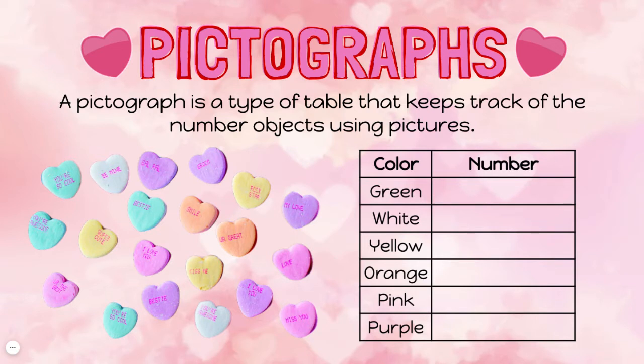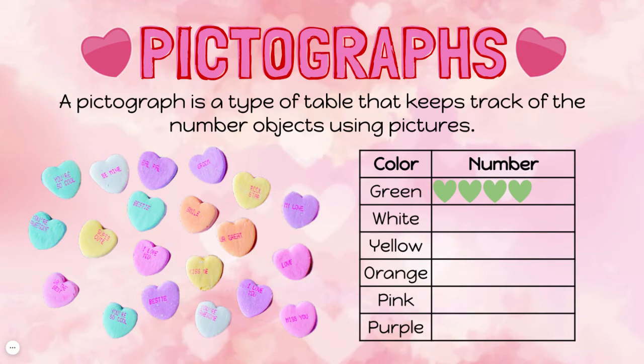Let's start with green. One, two, three, four. I have four green candy hearts. I'm going to use green hearts to record the number of green candy hearts on my pictograph. One, two, three, four. Now let's count how many white candy hearts we have.